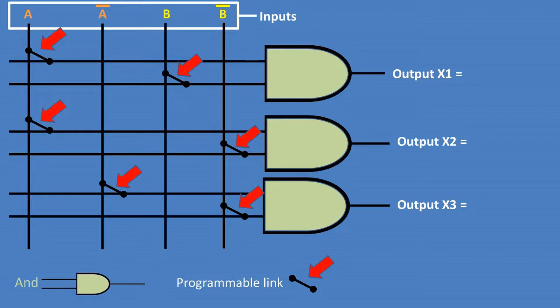Programmable links are depicted as a line with two circles at either end to mark a connection. These programmable links can be changed or programmed to accommodate different combinations of logical inputs to the AND logic gates.